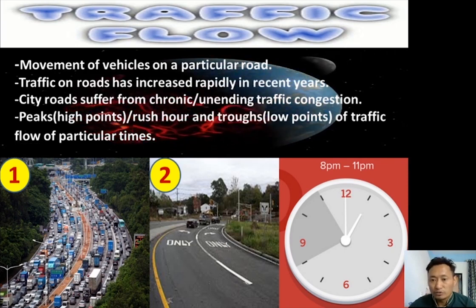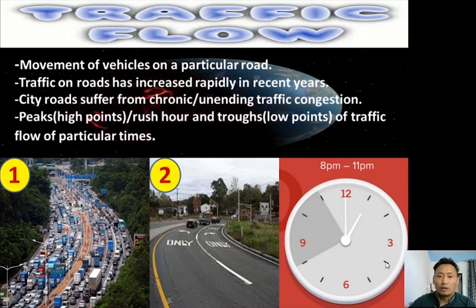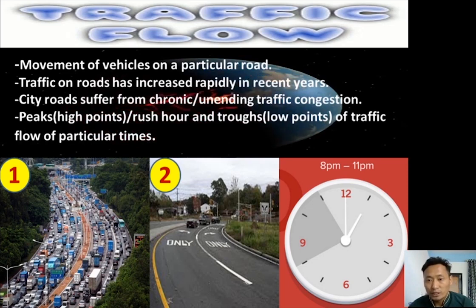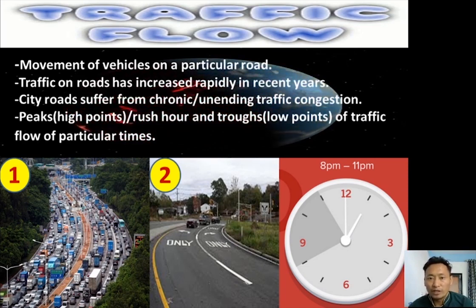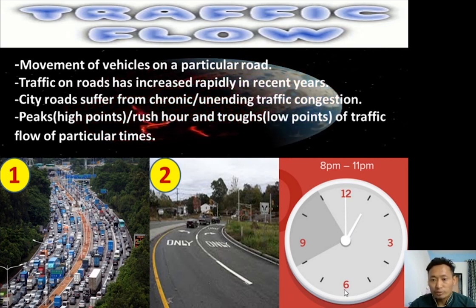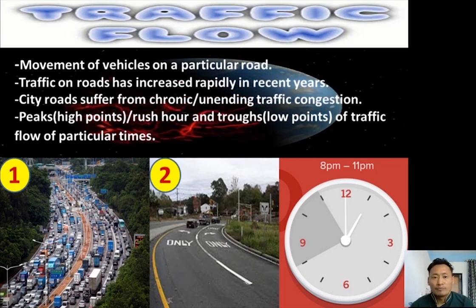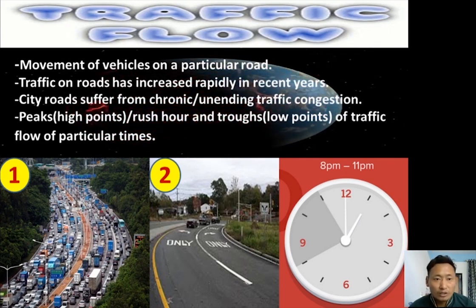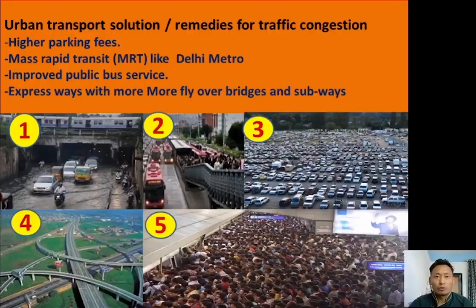From 11 AM to 4 PM we have fewer vehicles on the road because most people are settled in offices, schools, and colleges — this period is called the trough or low point. Again from 4 PM to 6 PM is another high point or rush hour, as people are coming back to their respective homes from offices, schools, and colleges.